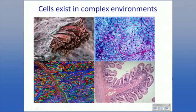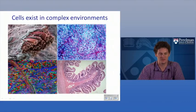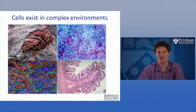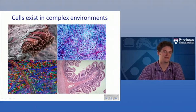Cells exist in complex environments. A neuron may have specific neighbors, specific synaptic partners. A muscle cell is normally in a bundle with connective tissue around it. All these aspects of cellular phenotype are really controlled by which genes a cell is expressing and how all that is controlled. In many cases, you really can only study that in vivo at the level of single cells.